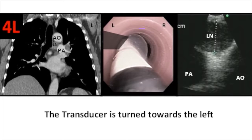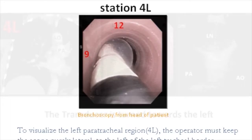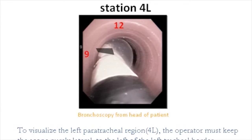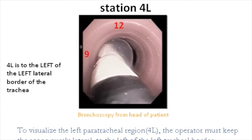The bronchoscope is placed in the lower trachea, approximately at the origin of the left main bronchus. With the balloon inflated, the transducer is turned towards the left to visualize the left paratracheal region. Be aware that while scanning, one might rotate the bronchoscope anterolaterally, back and forth, between the 12 o'clock and 9 o'clock positions.